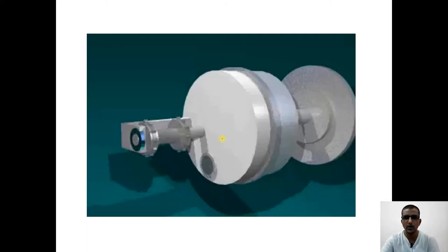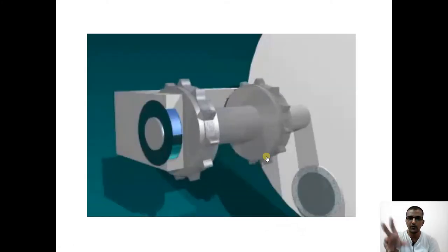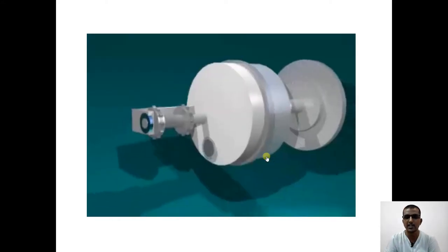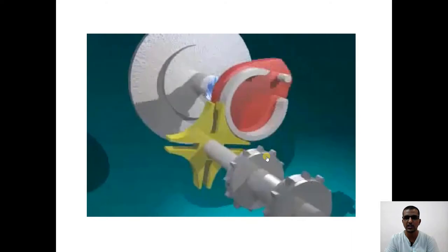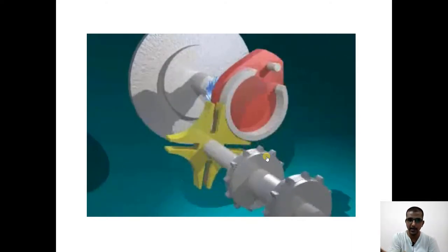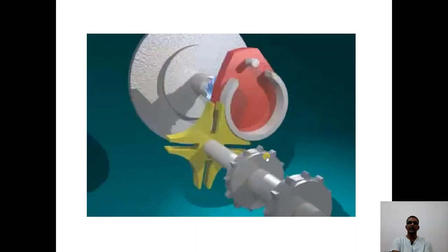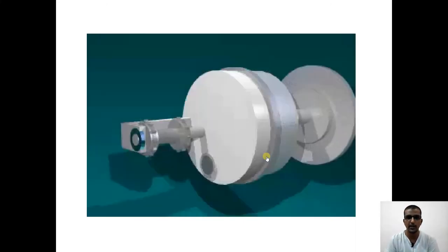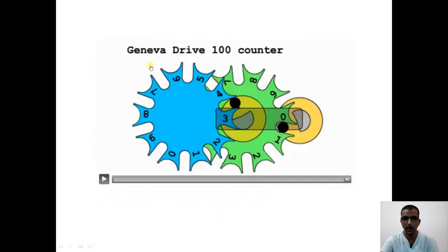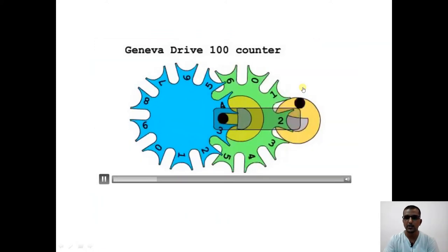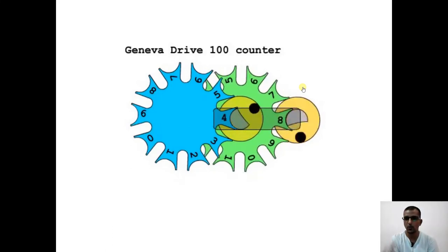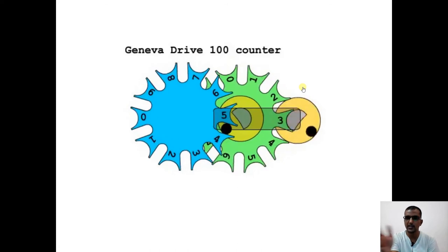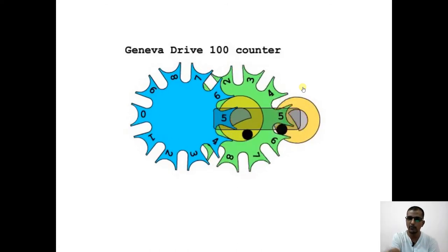Applications of the Geneva mechanism include movie theaters, where a small time gap between film frames is needed — a Geneva mechanism sets a time duration for each frame. Another application is in counters, where multiple interconnected Geneva mechanisms in yellow, green, and blue can be combined so that for every ten rotations of one member, another rotates by one, effectively counting rotations.